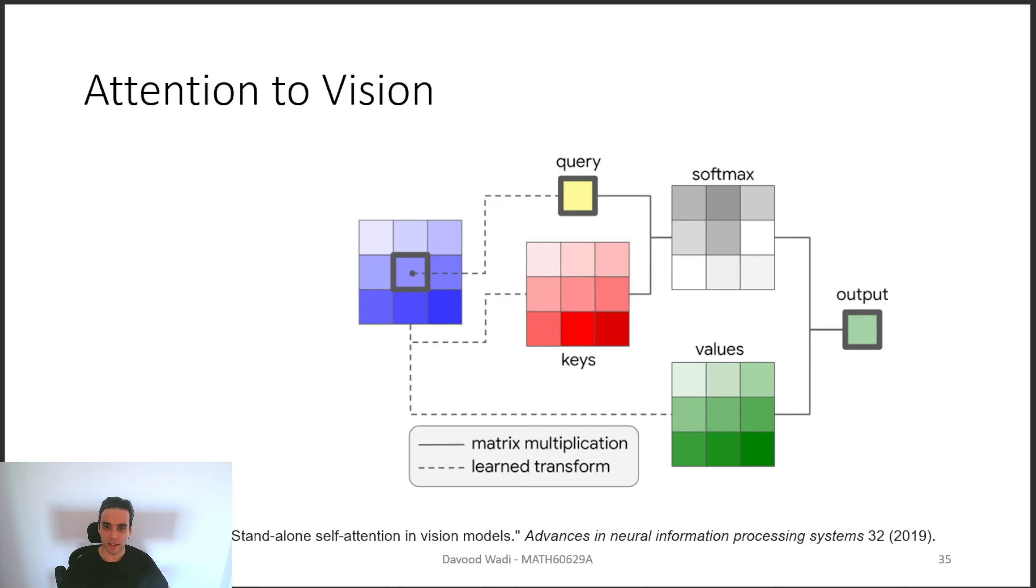So going from attentions to NLP to attentions applied to computer vision is pretty simple. So a given image is basically a sequence of pixels. So we can think of them as a sequence of different pixels from left to right, top to bottom.